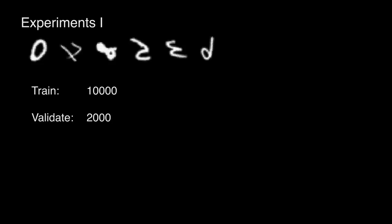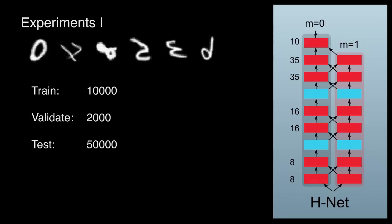We applied our harmonic networks to two tasks to test their benefits. The first task was classification on the rotated MNIST dataset consisting of 10,000 training images, 2,000 validation images and 50,000 test images. Our seven layer Hnet sets the state of the art on this problem beating the previous state of the art by 26%.